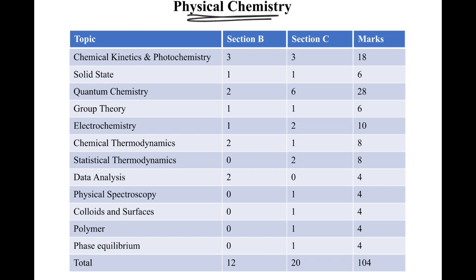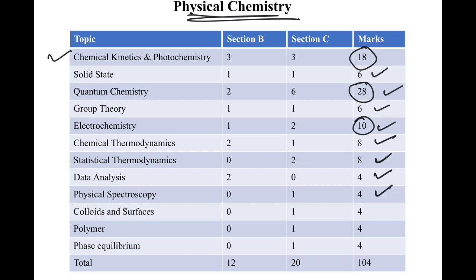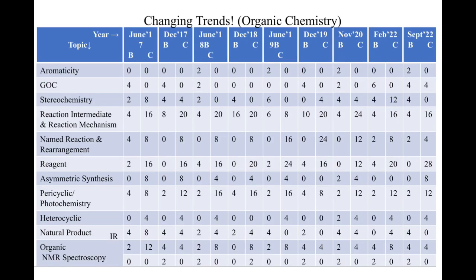For physical chemistry: chemical kinetics and photochemistry is always a major topic — 18 marks. Solid state gave 6 marks as usual. Quantum chemistry marks keep increasing — 28 marks this time. Group theory gave 6 marks. Electrochemistry 10, chemical thermodynamics 8, statistical thermodynamics 8, data analysis 4, physical spectroscopy 4. Colloids and surfaces gave 4 marks (BET equation question). Polymer and phase equilibrium each gave 4 marks. Total: 104 marks for physical chemistry.